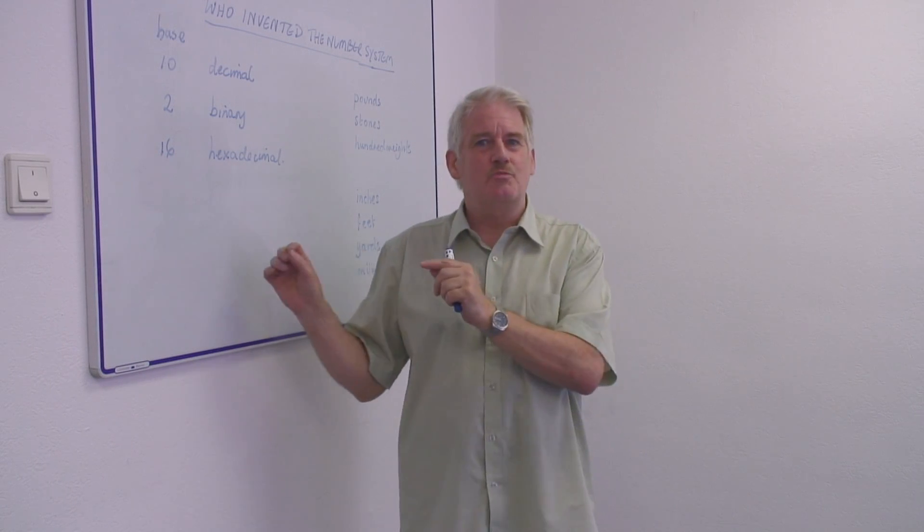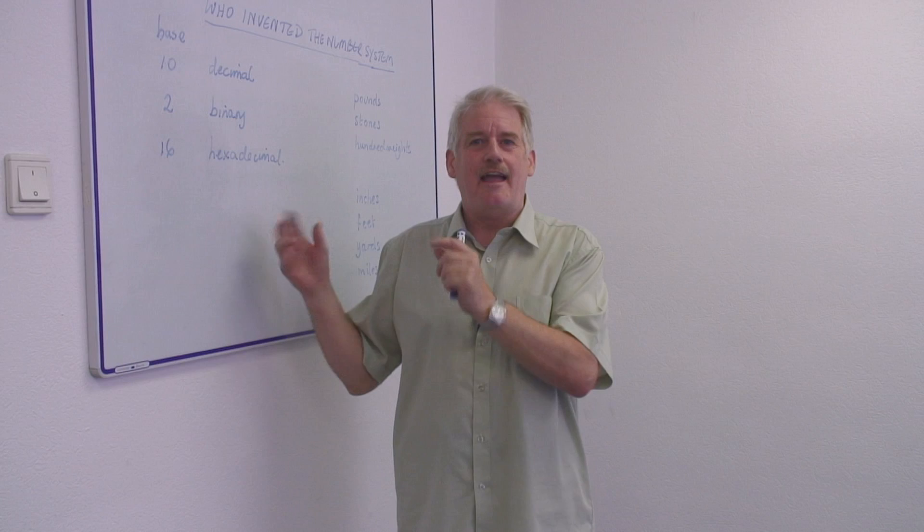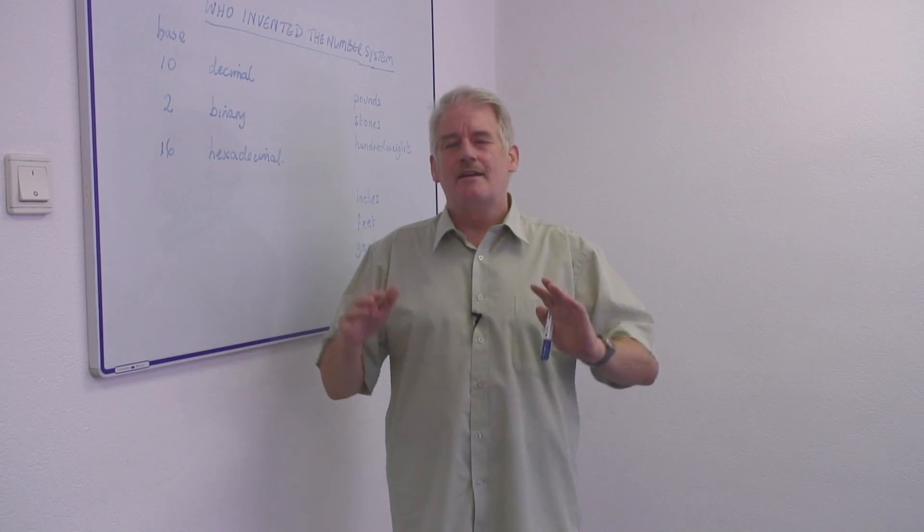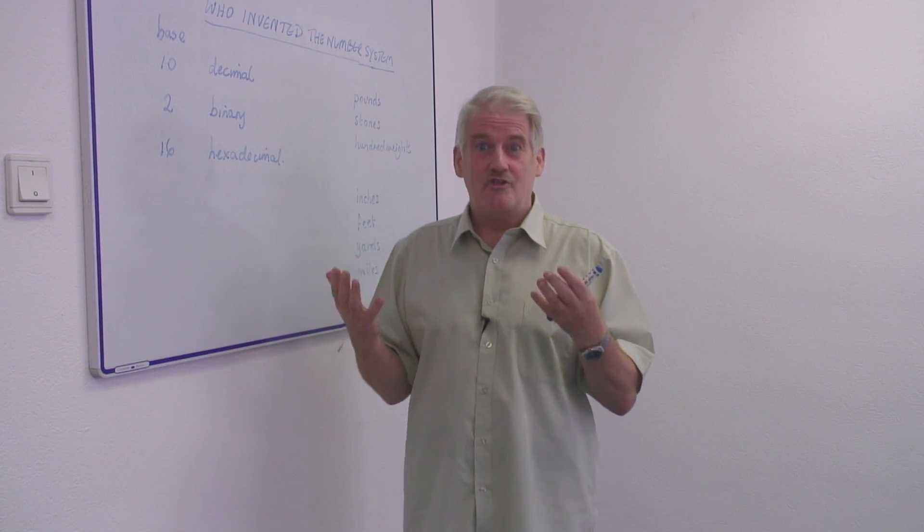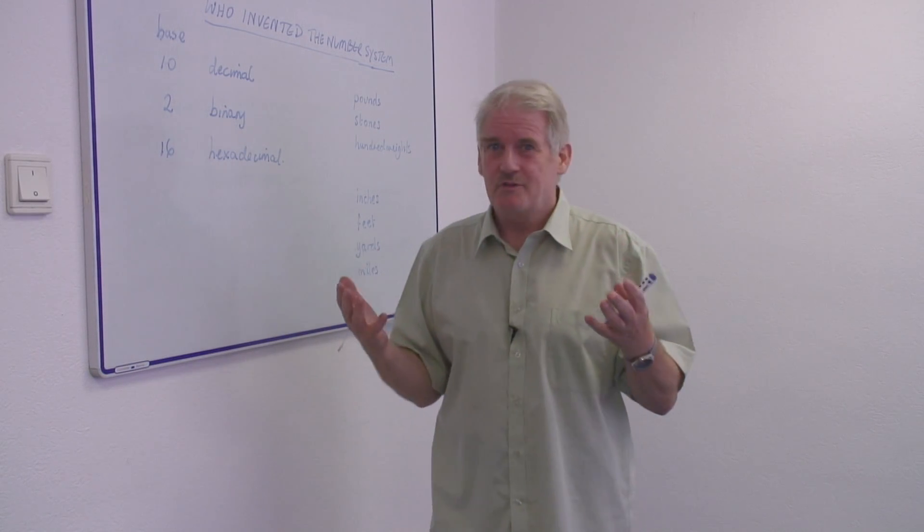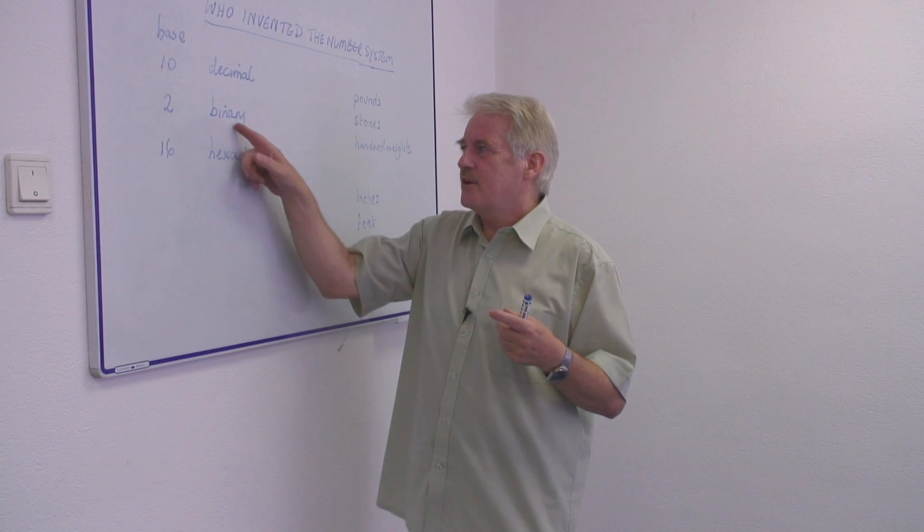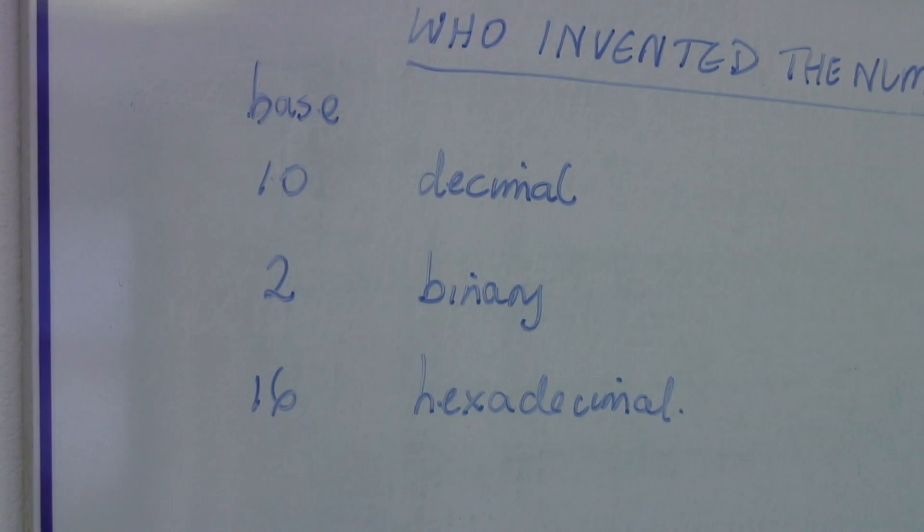And then we have some more digits we call A, B, C, D, E, F. So we'll have a number like 6CF4, which to us as human beings looks like a strange number. But a computer is very happy with that number because it relates easily to binary.